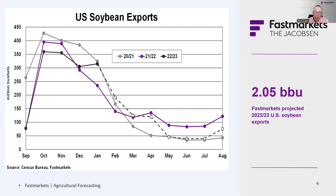I think part of the price decline is because the market has come to grips with the idea that while the Argentine crop has been much worse than expected, the Brazilian crop is large enough to more than make up for that — and probably enough that U.S. exports during the summer will fall to minimal levels. We're basically forecasting right along the historical bottom for May through July exports.